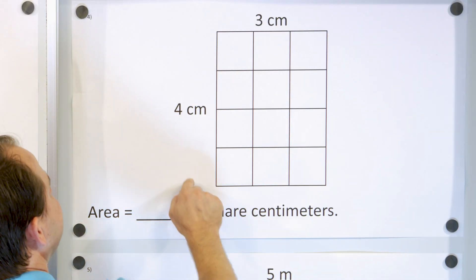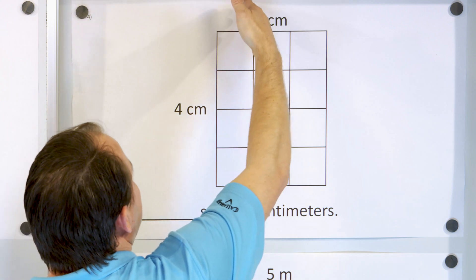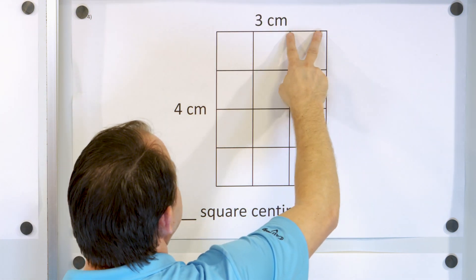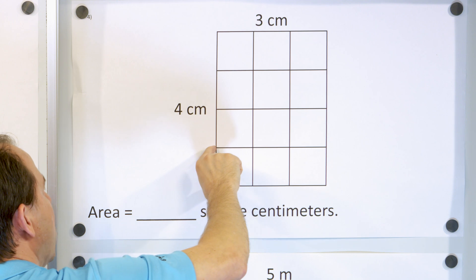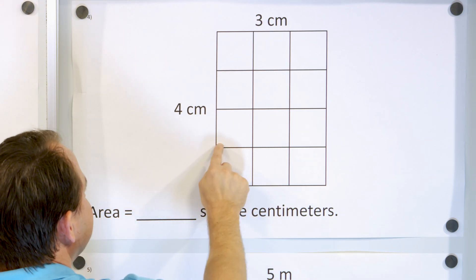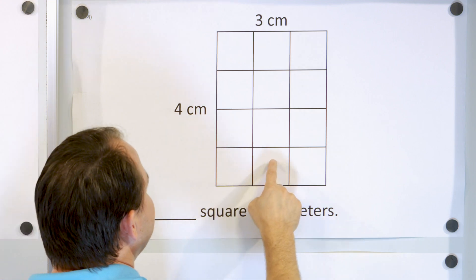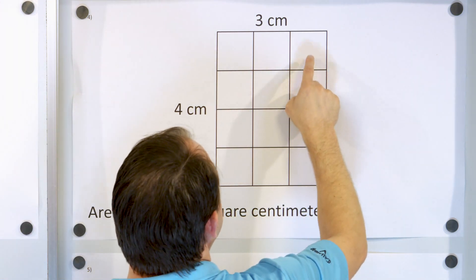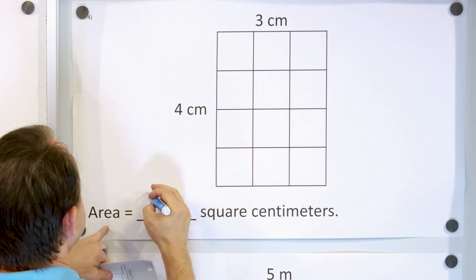Here we have four centimeters tall by three centimeters wide. We chop this into three segments wide and four segments tall, making each piece one centimeter by one centimeter — a square centimeter. How many do we have? One, two, three, four, five, six, seven, eight, nine, ten, eleven, twelve square centimeters.